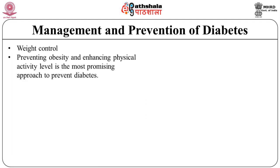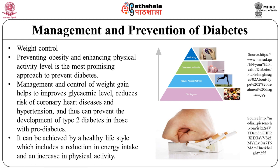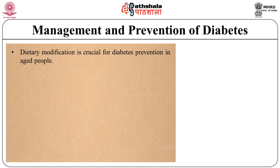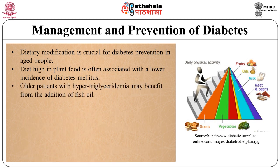Management and prevention of diabetes: weight control, preventing obesity and enhancing physical activity level is the most promising approach to prevent diabetes. Management and control of weight gain helps to improve glycemic levels, reduces risk of coronary heart disease and hypertension, and can prevent development of type 2 diabetes in those with pre-diabetes. This can be achieved by a healthy lifestyle including reduction in energy intake and increase in physical activity. Diet high in plant food is often associated with a lower incidence of diabetes mellitus, and older patients with hypertriglycerides may benefit from fish oil.